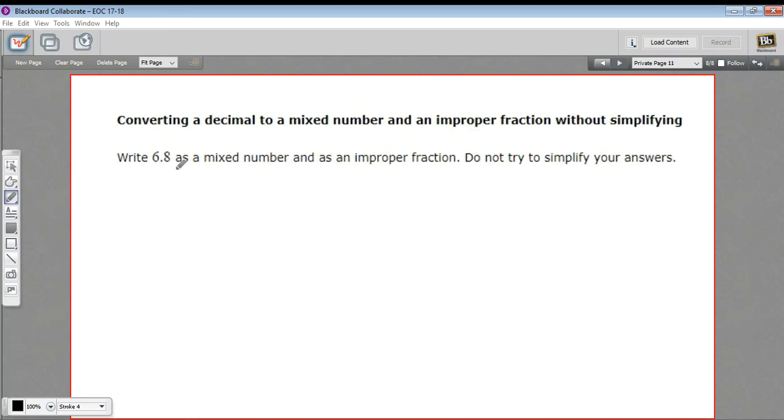In this problem, we have a decimal greater than 1, and we're being asked to write it as a mixed number, so that's with an integer part and then a fraction, and also as an improper fraction, where it's all just a fraction where the numerator is bigger than the denominator. So let's see how this works.